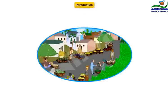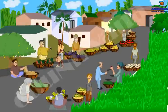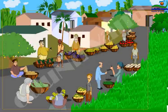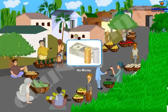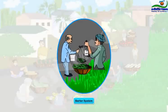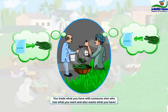Once upon a time, there was an island called No Money Island. There were 20 people on the island and each person had one product or skill set, which he had to trade with the others to satisfy his needs. The island didn't have the concept of money and the islanders bought goods and services through a barter system — you trade what you have with someone who has what you want and wants what you have.